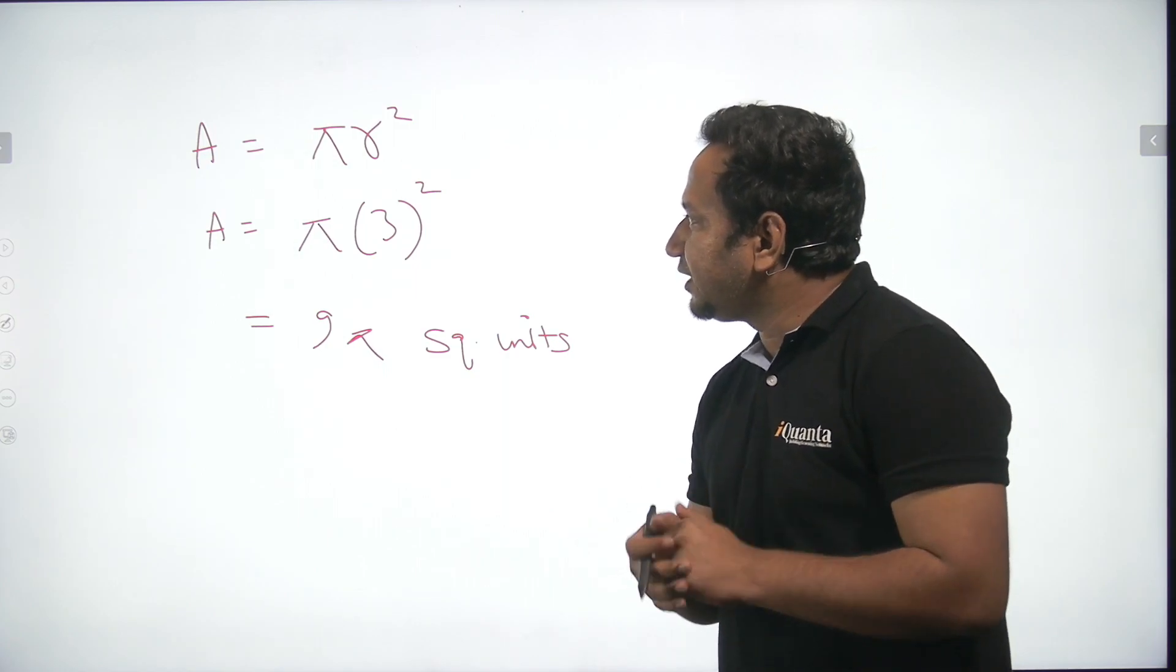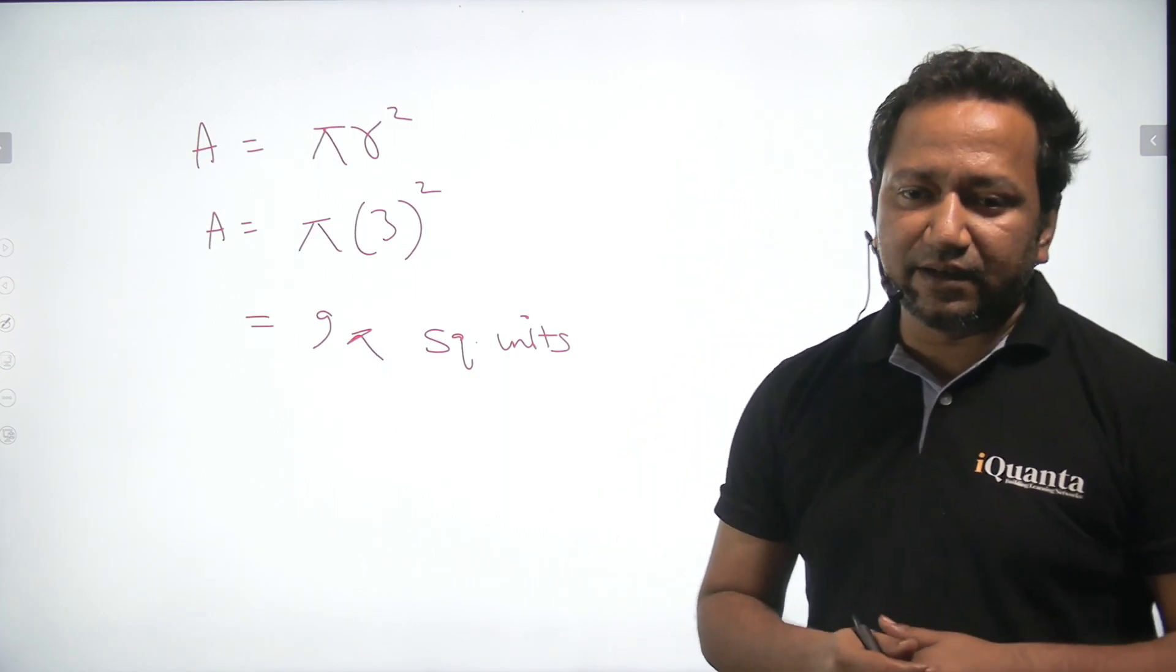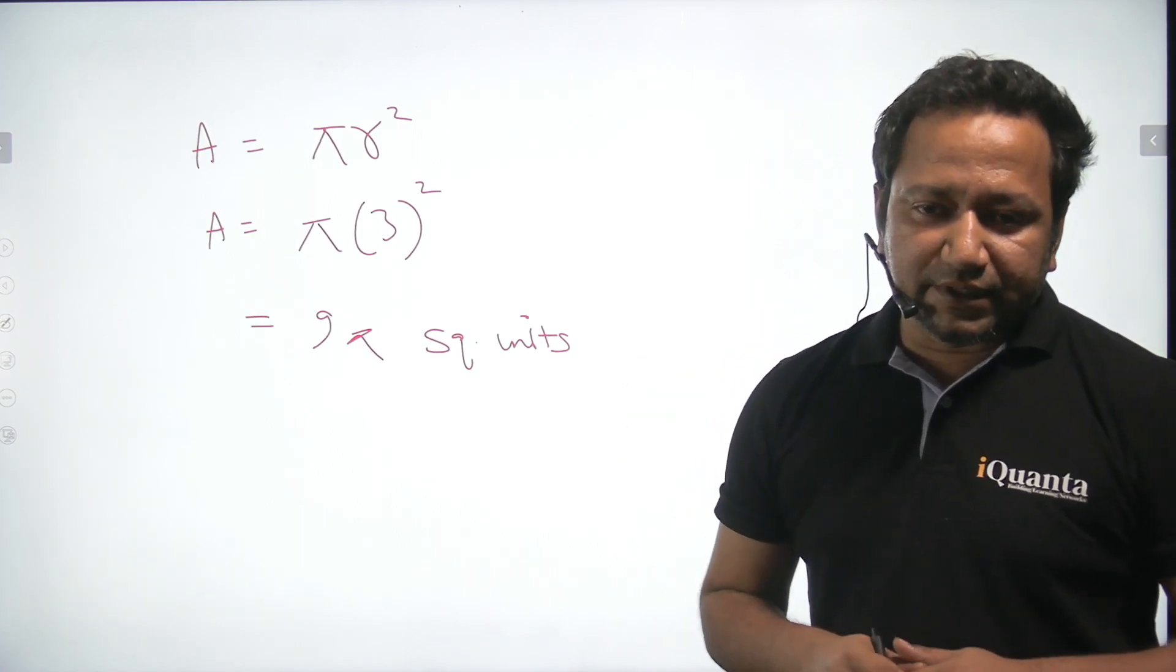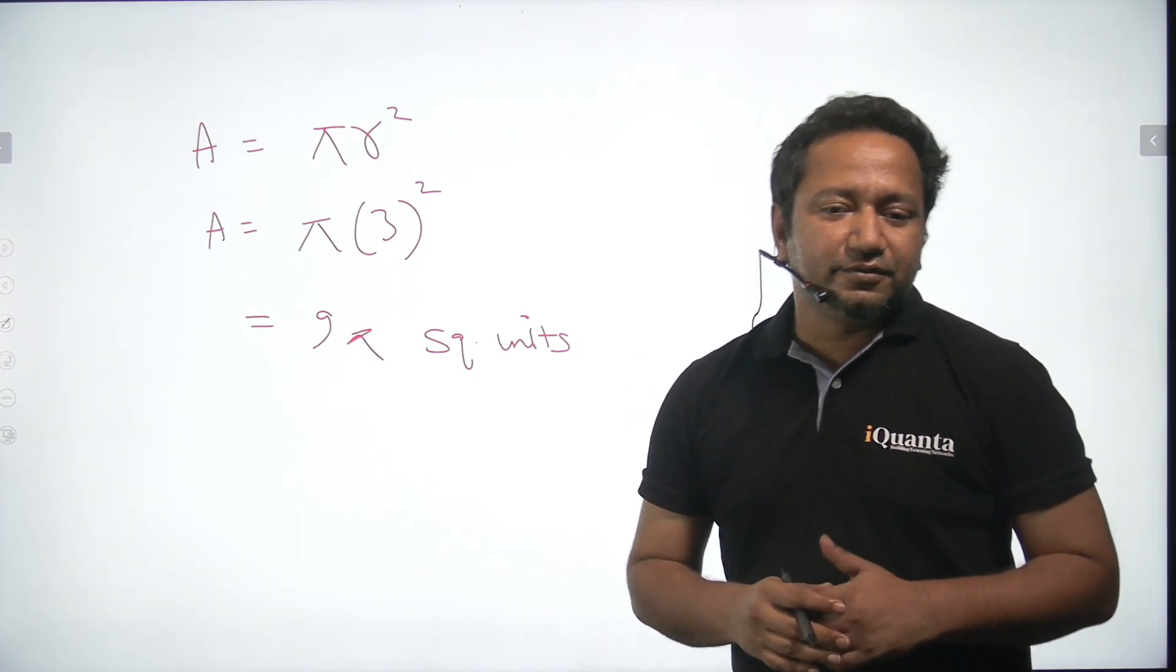So I hope you have understood a very important, very nice and very interesting formula of finding the in radius of a right angle triangle. Moreover, we have also applied the Pythagorean triplets over here. The link I'll be providing with this class. Thank you. We'll meet again.